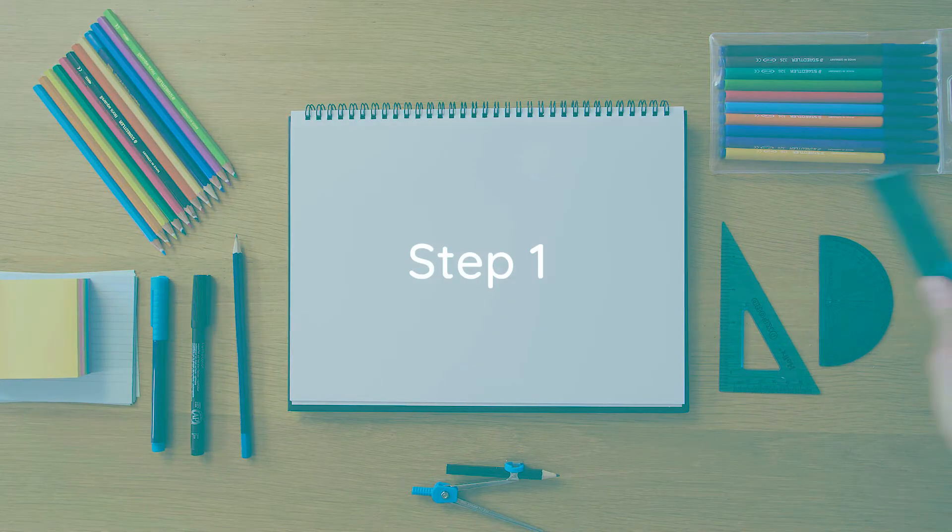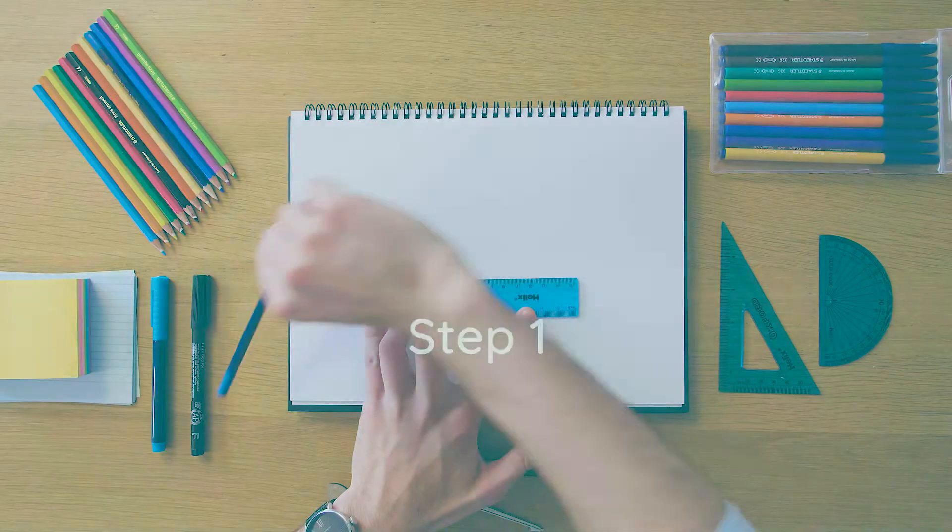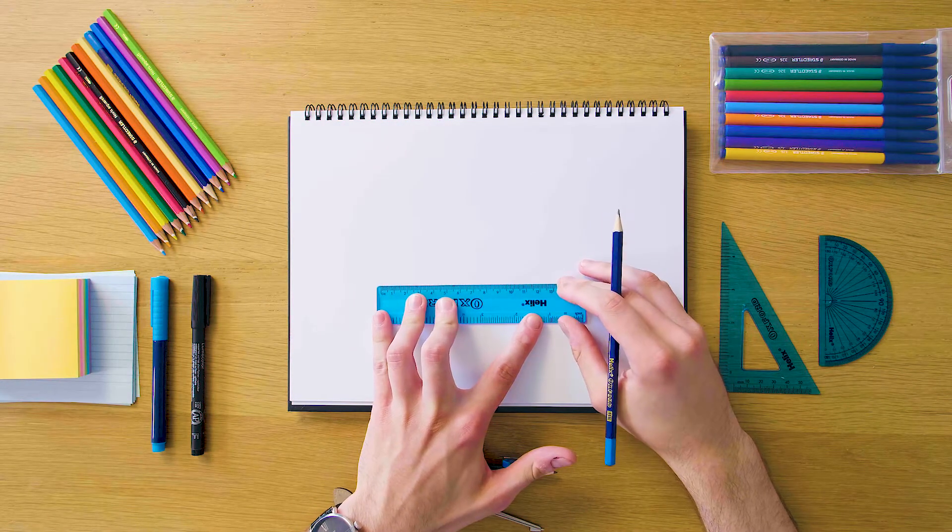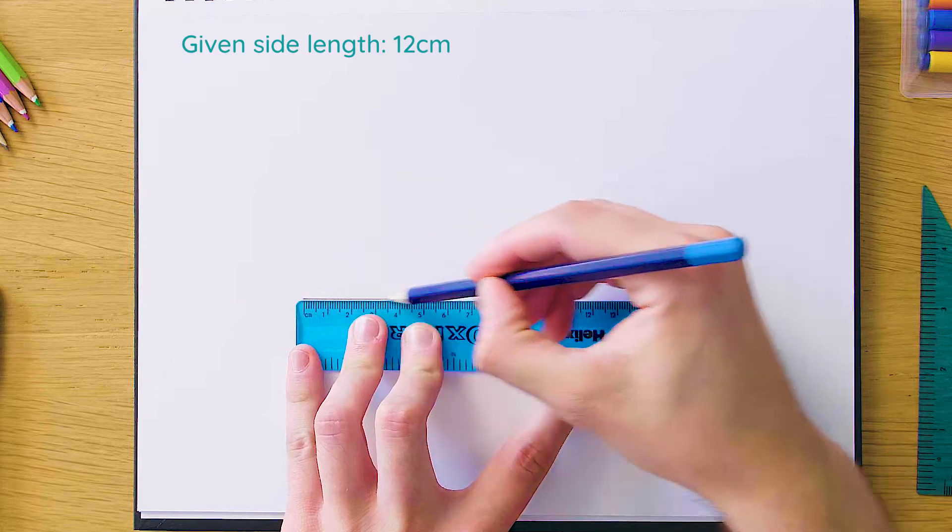Okay so our first step is going to be to grab our ruler and draw our first side length which is 12 centimeters, so that's going to be our horizontal line. We're just going to draw that across like this.